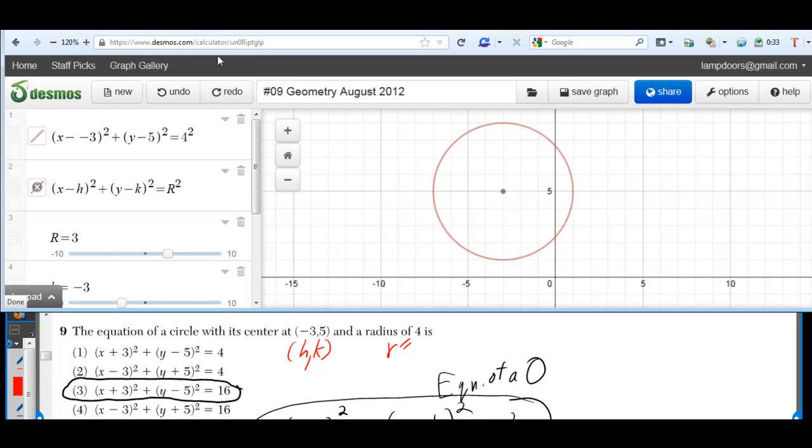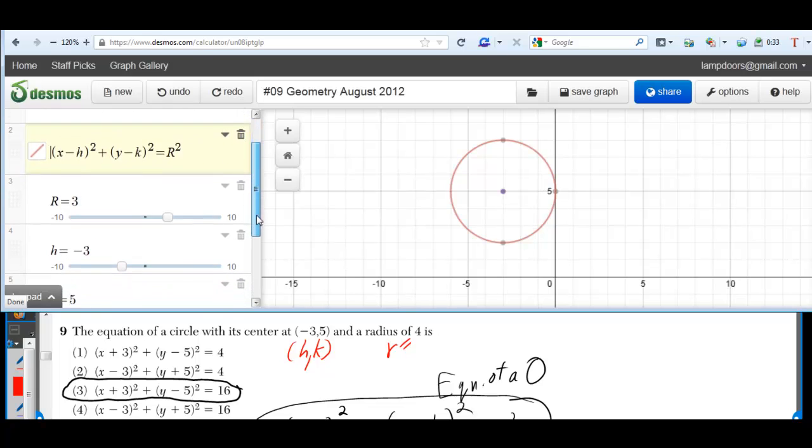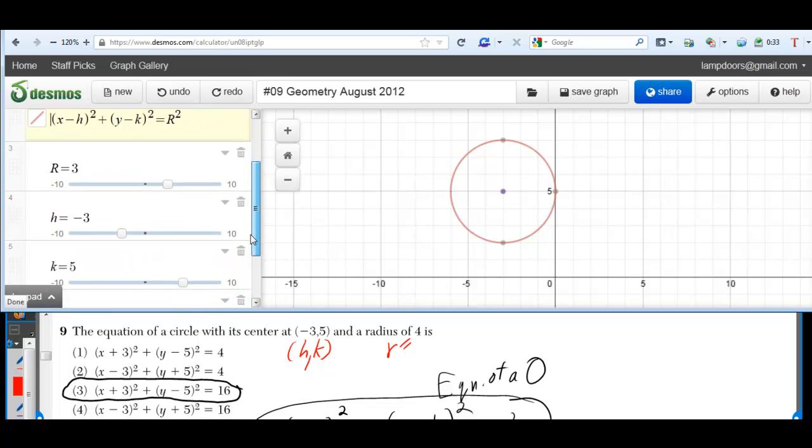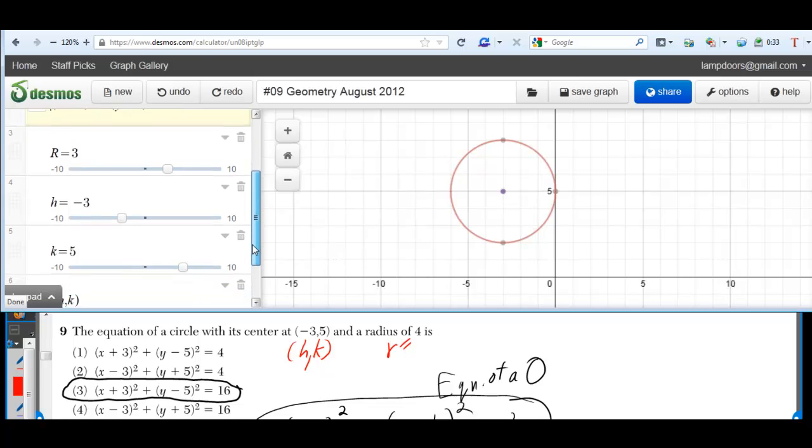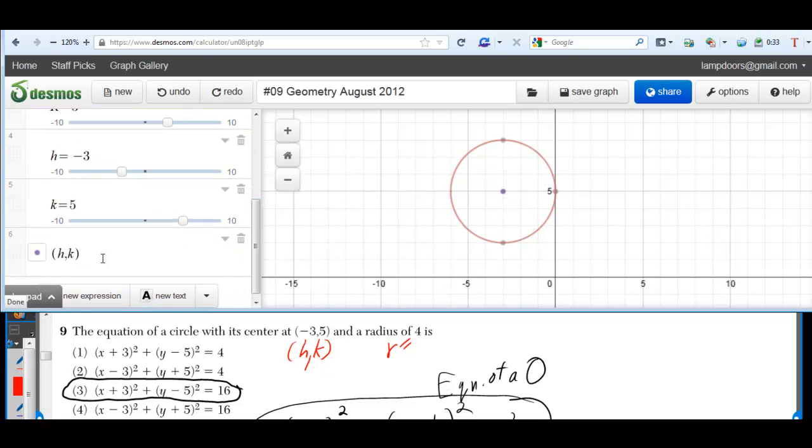I have the link to the Desmos.com graph in the description. The first line I wrote in our example. In the second line I put in the general formula and I created these sliders for h, k, and r. And also I put in h, k, so we'll always graph whatever h, k is.